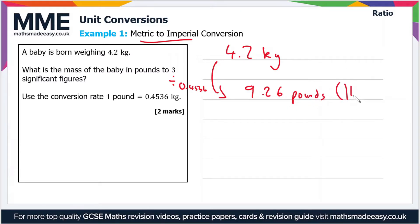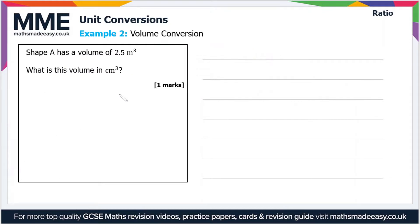You can write pounds out like this, or you can use the shorthand which is lb. So moving on to example 2 then: Shape A has a volume of 2.5 meters cubed. What is this volume in centimeters cubed?